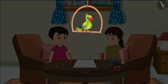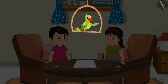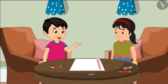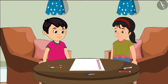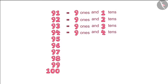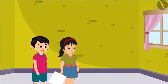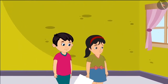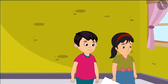Today, Chotu and Pinkie's teacher has asked them to make a chart of numbers from 91 to 100. Pinkie said, "Let's write the ones and tens of these numbers in the chart." Okay, Chotu! Pinkie and Chotu wrote numbers from 91 to 100 and also wrote the ones and tens of some numbers. Both of them are going to show the chart to their mother before writing further.